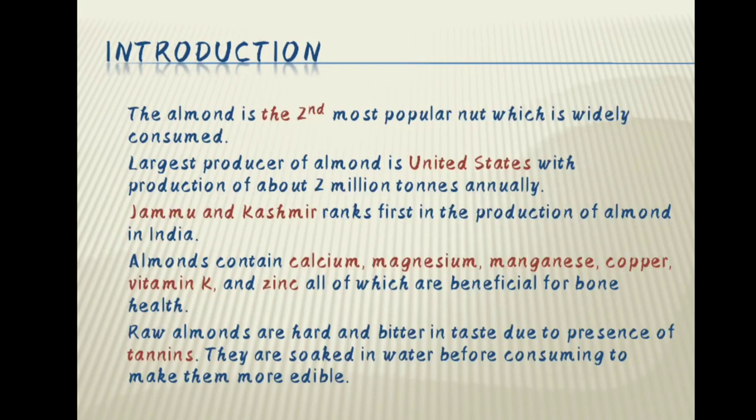Introduction. The almond is the second most popular nut which is widely consumed. The largest producer of almond is the United States with a production of about 2 million tons annually. Jammu and Kashmir ranks first in the production of almond in India. Almond contains calcium, magnesium, manganese, copper, vitamin K and zinc, all of which are beneficial for bone health. Raw almonds are hard and bitter in taste due to the presence of tannins.